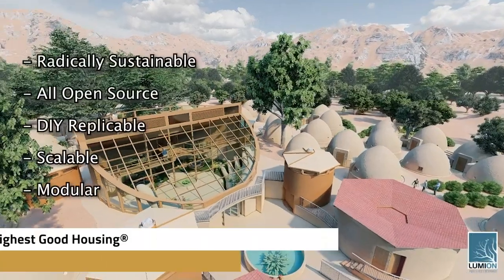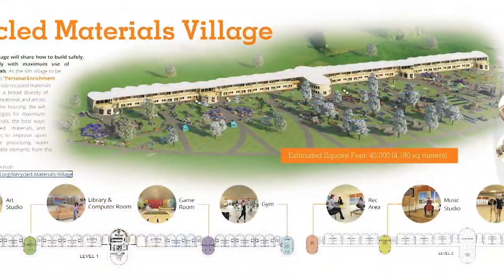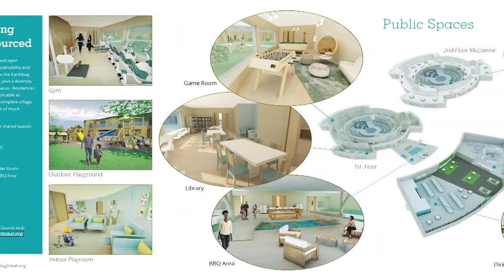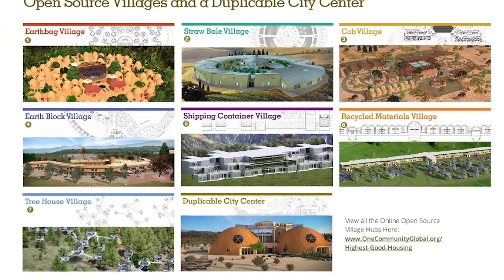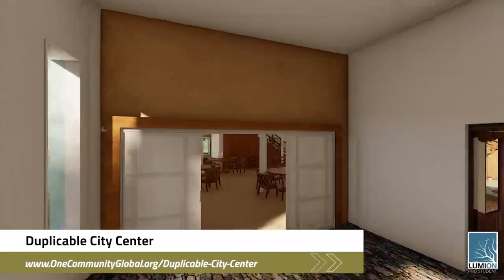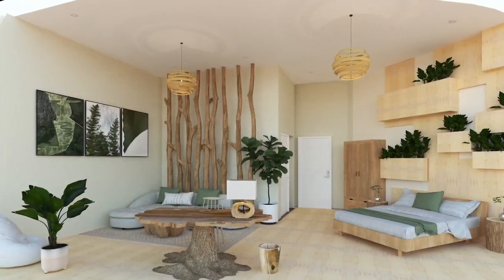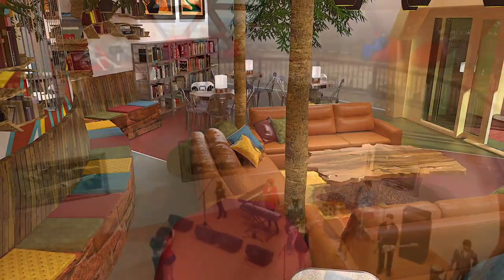The One Community approach to highest good housing is eco-artistic home building that is affordable, sustainable, do-it-yourself duplicable, resource and space efficient, and consists of seven different sustainably constructed village models. One Community is also creating an open-source duplicable city center designed to be LEED Platinum certified, provide 12 guest rooms, dining for over 150 people, and laundry and recreation space for over 300 people, all while saving money, time, space, and resources.